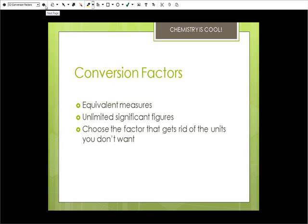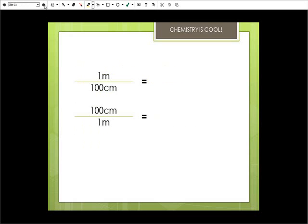So let's take a look at our stuff. Essentially, conversion factors are a ratio of equivalent measurements, and they have no limit on the significant figures. You don't do any rounding for sig figs until the very end of the process, so please don't get yourself messed up there. You want to choose the factor that gets rid of the units that you don't want.